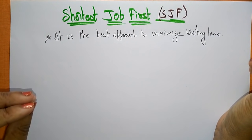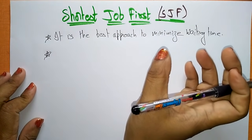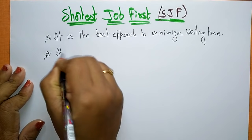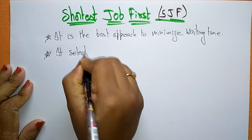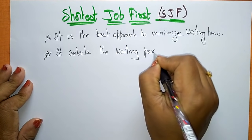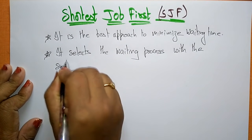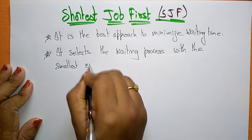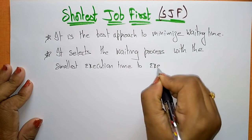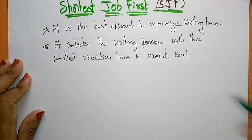It selects the waiting process with the smallest execution time to execute next. The name itself indicates it is Shortest Job First, so that's why it takes the smallest execution time to execute next. Let us take an example for this Shortest Job First.